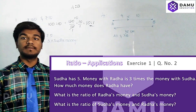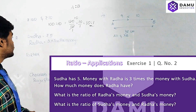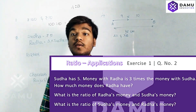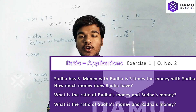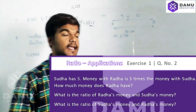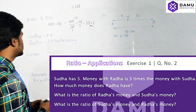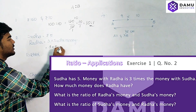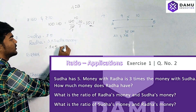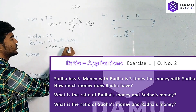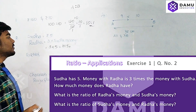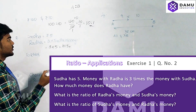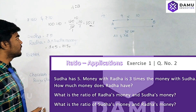Next, Sudha has five rupees and Radha has three times Sudha's money. Then what is the amount Radha has? Three times means three into Sudha's money, which is five, that is fifteen rupees. So Radha has fifteen rupees.